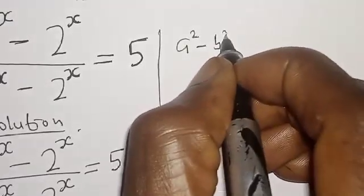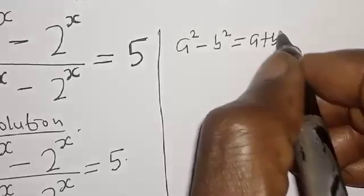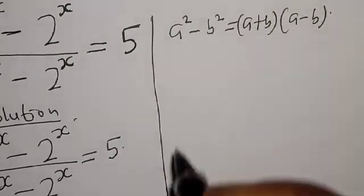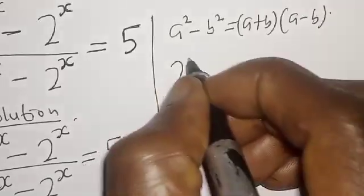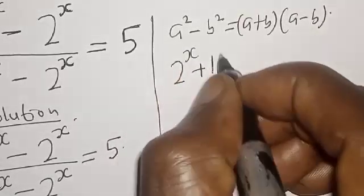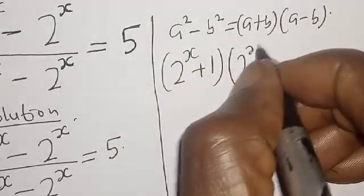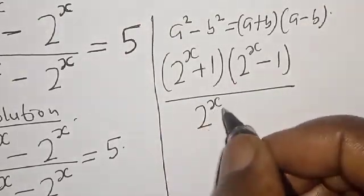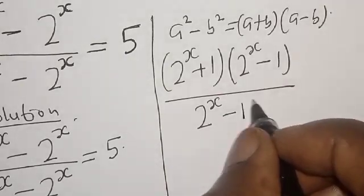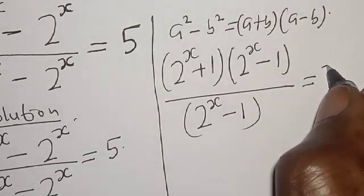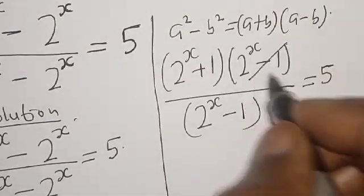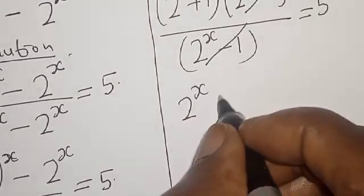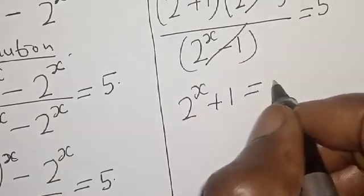Now we apply the difference of squares: a squared minus b squared equals a plus b multiplied by a minus b. The numerator 2 raised to the power 2x minus 1 factors as 2 raised to the power x plus 1, multiplied by 2 raised to the power x minus 1. Divided by 2 raised to the power x minus 1, equal to 5. We cancel the common factor of 2 raised to the power x minus 1.